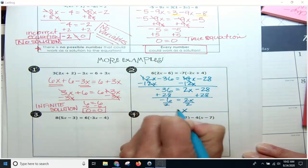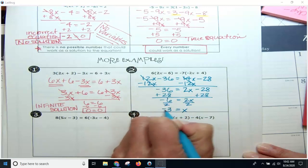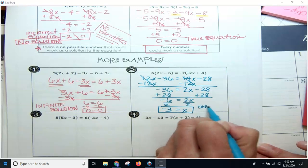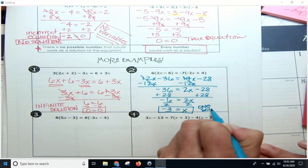Divided by 2. So in this situation I have a variable and a number, so this is one solution. One solution, and the solution is negative 3.